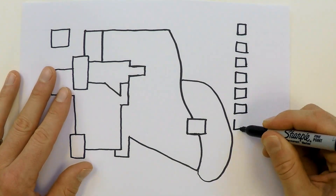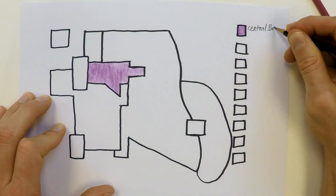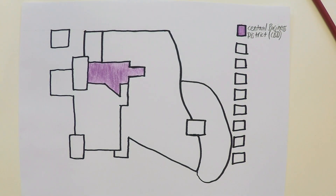Now that we have some background, let's break this bad boy down. The CBD is essentially what it is in the other two models we discussed earlier — the concentric zone and the sector model. It is the largest service center in the city and will have the tallest buildings like you would see in any other city. However, there are no picture-perfect little circles around it and no wedges leading to the outskirts of the city. Rather, there are specialized nodes throughout the city.